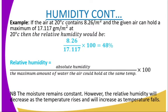For example, if the air at 20 degrees Celsius contains 8.26 grams per meter squared, and the given air can hold a maximum of 17.117 grams per meter squared at 20 degrees Celsius, then the relative humidity would be 8.26 divided by 17.117 times 100, which equals 48%. The formula uses the absolute humidity — that is the actual value divided by the maximum times 100.